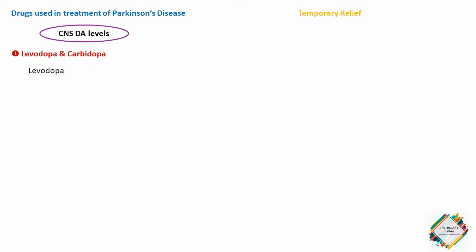Levodopa is a metabolic precursor of dopamine and it restores dopaminergic neurotransmission in the neostriatum by enhancing the synthesis of dopamine in the remaining surviving neurons of the substantia nigra. In early disease, the number of residual dopaminergic neurons in the substantia nigra is adequate for conversion of levodopa to dopamine — that is typically about 20% of normal neurons. In new patients the therapeutic response to levodopa is consistent and the patient rarely complains that the drug effects wear off.